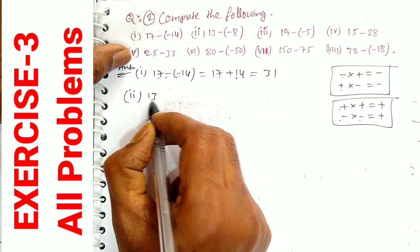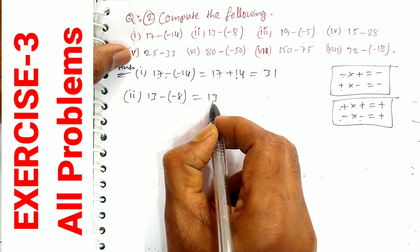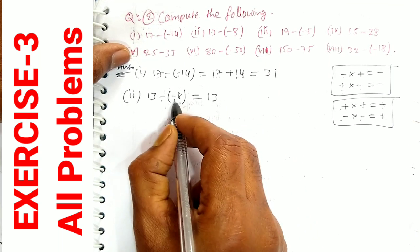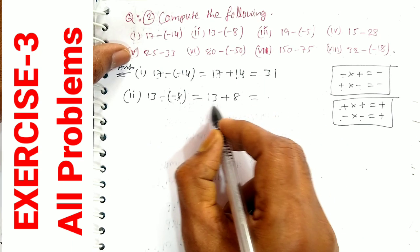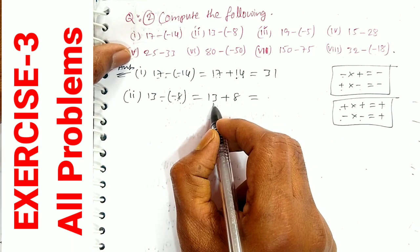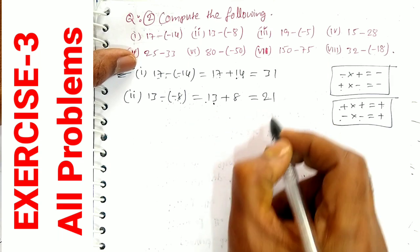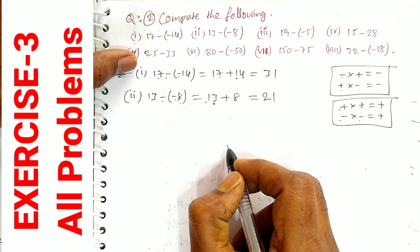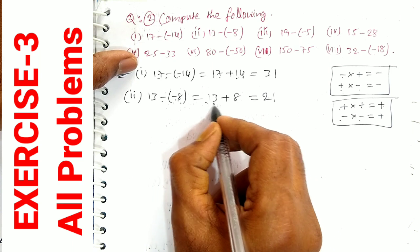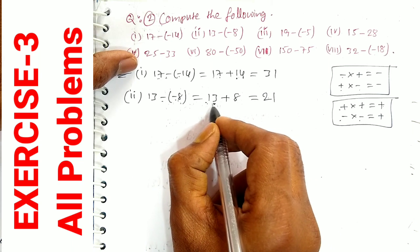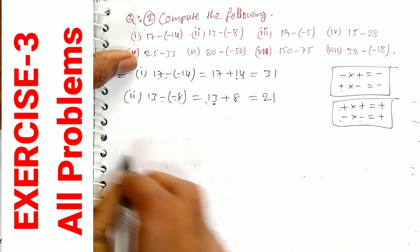Second question: 13 minus (-8). Minus into minus becomes plus, so 13 plus 8. Adding: 3 plus 8 is 11, 11 plus 10 is 21. Therefore, 13 minus (-8) is equal to 21.